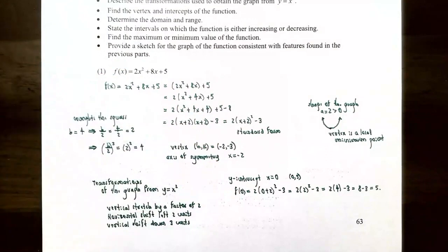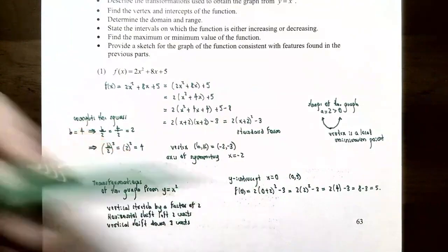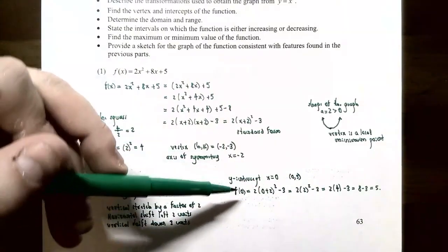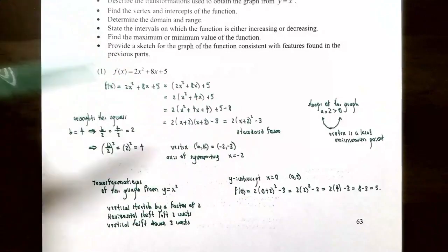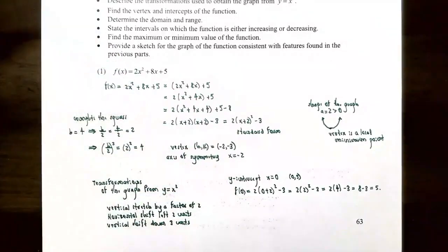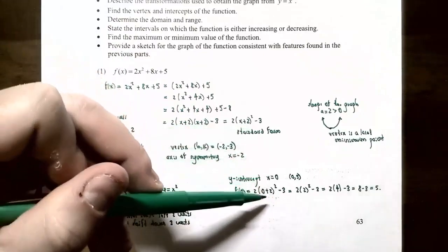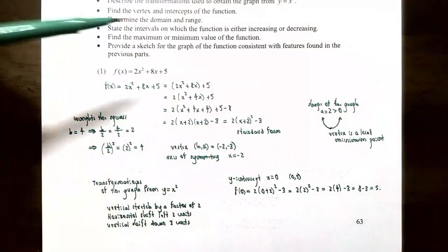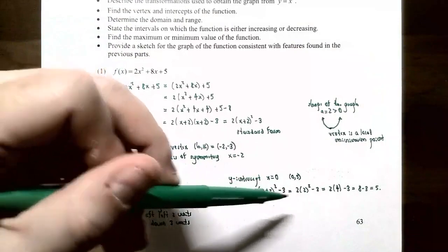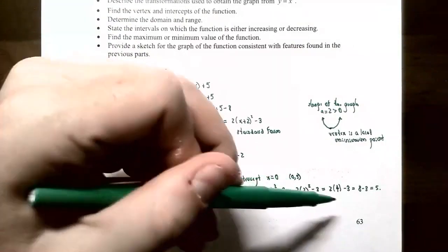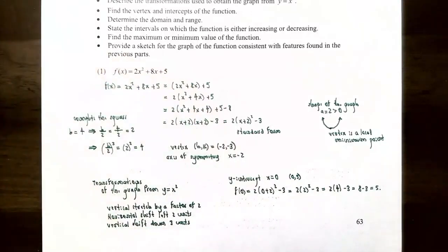To find the y-intercept, substitute x = 0 into the standard form: f(0) = 2(0 + 2)² − 3 = 2(4) − 3 = 5. So the y-intercept is (0, 5).